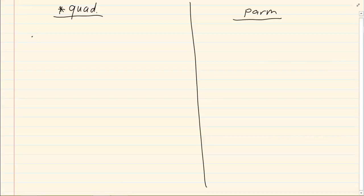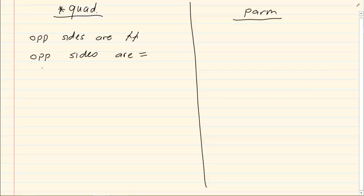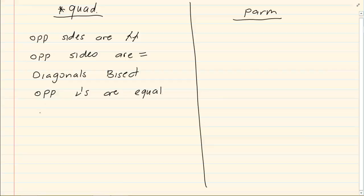The first one is that you prove that the opposite sides are parallel. The second one is that you prove that the opposite sides are equal. The third one is that the opposite angles are equal. And the fifth one is that one side is parallel and equal.